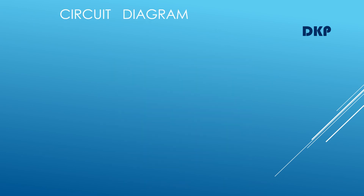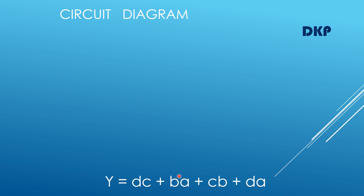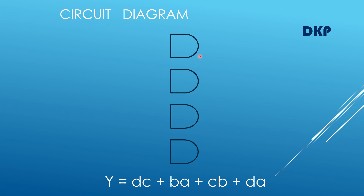The final step is to draw the circuit diagram from the Boolean expression. The simplified Boolean expression is Y = DC + BA + CB + DA. We need four AND gates — one for DC, one for BA, one for CB, and one for DA. The outputs of these AND gates should be connected to one OR gate. So we need four AND gates and one OR gate.